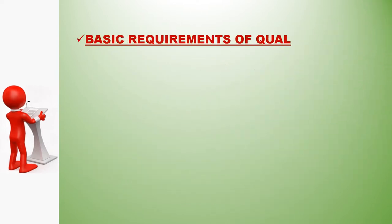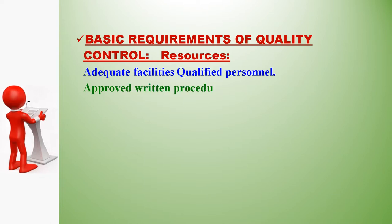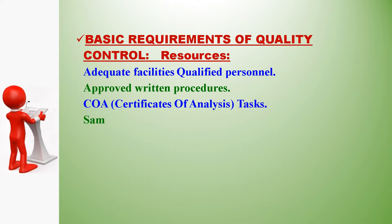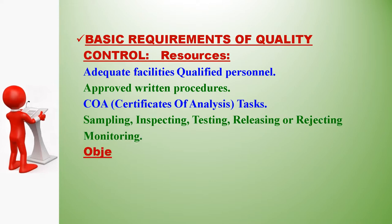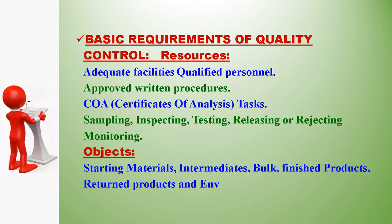Basic requirements of quality control include: adequate facilities, qualified personnel, approved written procedures, certificates of analysis (CoA), and the tasks of sampling, inspecting, testing, releasing or rejecting, and monitoring. Objects monitored include starting materials, intermediates, bulk and finished products, returned products, and environmental conditions.